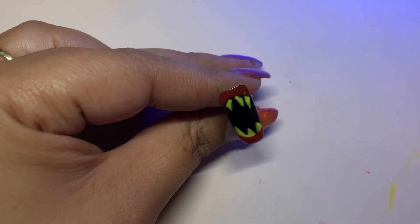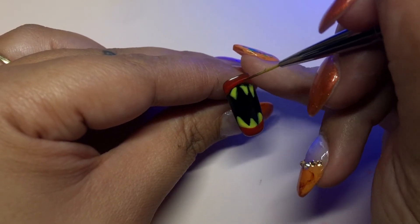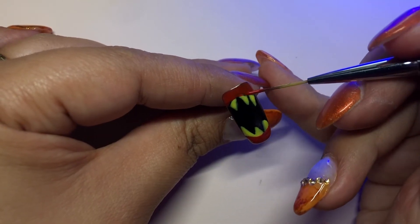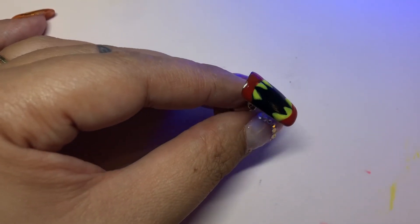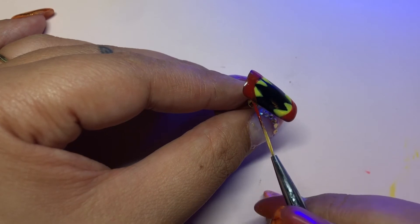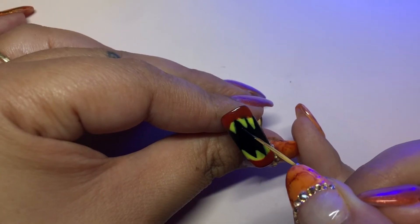If the teeth look a little sloppy on the top, you can fix it with the red. You're just defining everything.